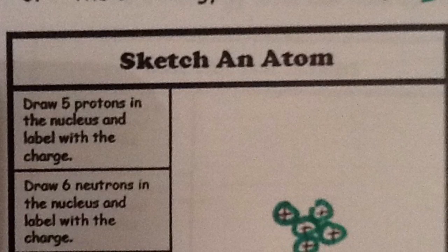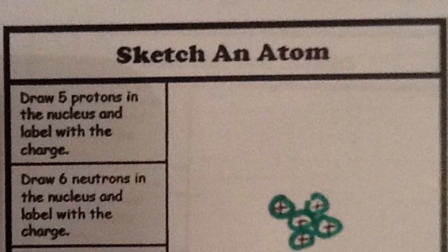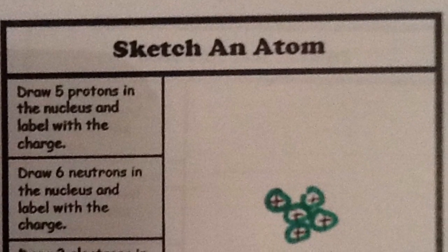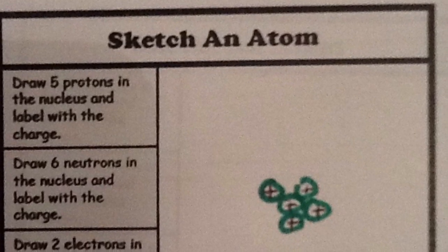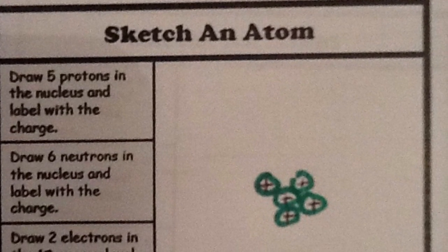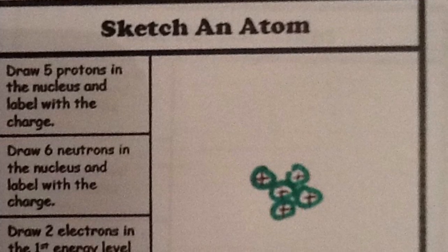Now let's practice drawing a Bohr model. The instructions say to first draw five protons in the nucleus and label with the charge. So draw five circles and put plus signs inside of them to label them as positive protons.